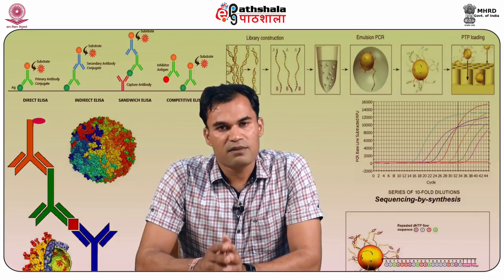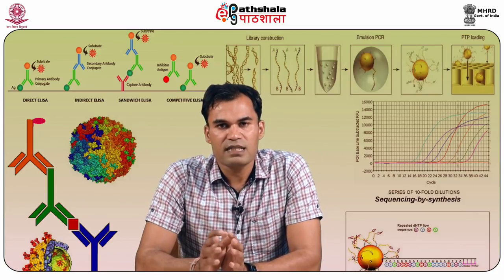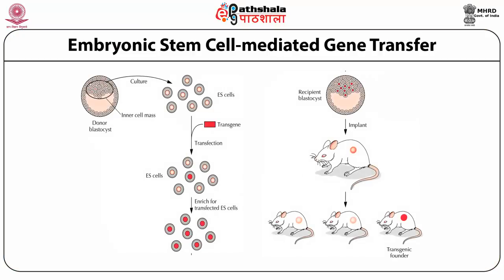The advantage of this method is that it allows site-specific integration because of gene targeting, though it is time and cost intensive. From the donor blastocyst at the 16-cell stage, the inner cell mass is isolated — this is the cell of interest into which we transfer our transgene. After injection of the transgene, the cells are enriched for infected embryonic stem cells. The blastocyst containing the transgene is implanted into a mouse, leading to progeny, some of which will have a transgenic nature.